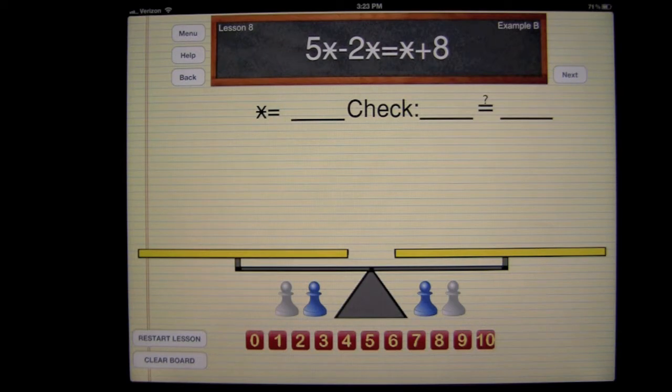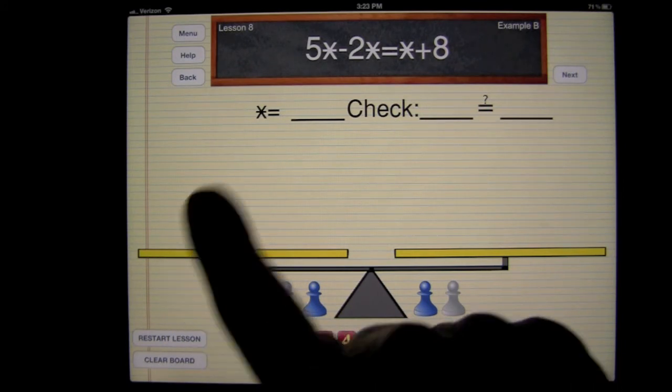This is based on a real-world physical learning method, which includes a balance beam as well as the two different pawns and the number die here. And I'm going to go ahead and figure out how to solve this.